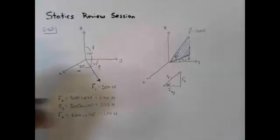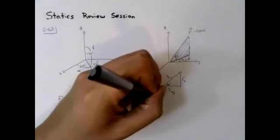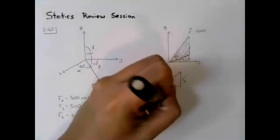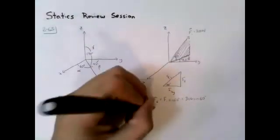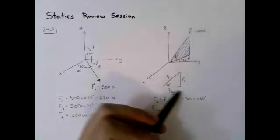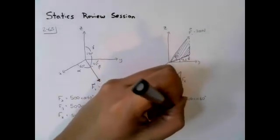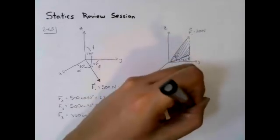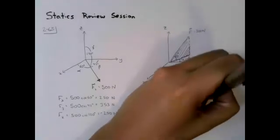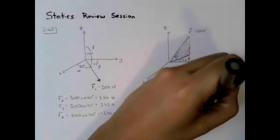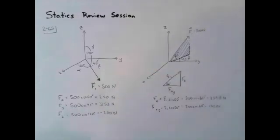So we have a right triangle with Fz, f of xy, and F1. Now we can apply what we know to solve for these components. So Fz would be F1 times sine of 60, and F1 is 300 newtons. And then f of xy would be F1 times cosine of 60, so 300 times cosine of 60. The values are 259.8 newtons for Fz and Fxy is 150 newtons.